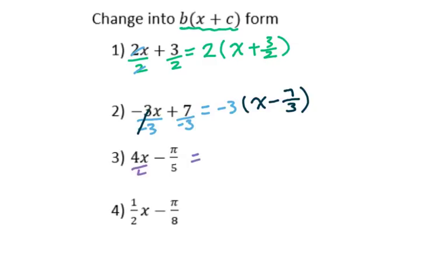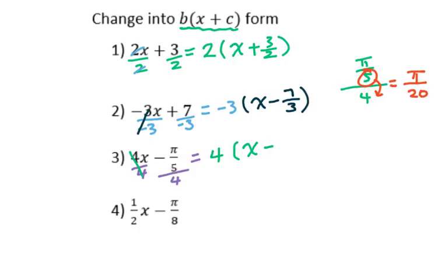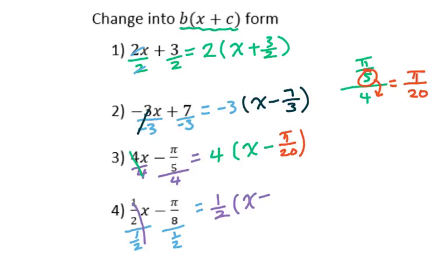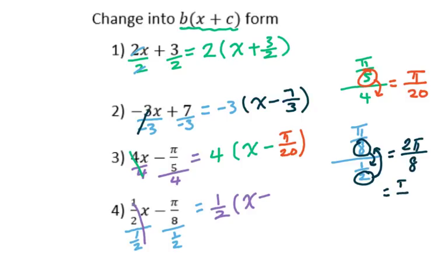For number 3, divide by 4. You will get x minus (π over 5), then divided by 4. This is a complex fraction — denominator drops down, do multiplication. You get π over 20. For number 4, divide by 1 half. You get 1 half times (x minus π over 8, divided by 1 over 2). Denominator drops and jumps up. You get 2π over 8, which reduces to π over 4.